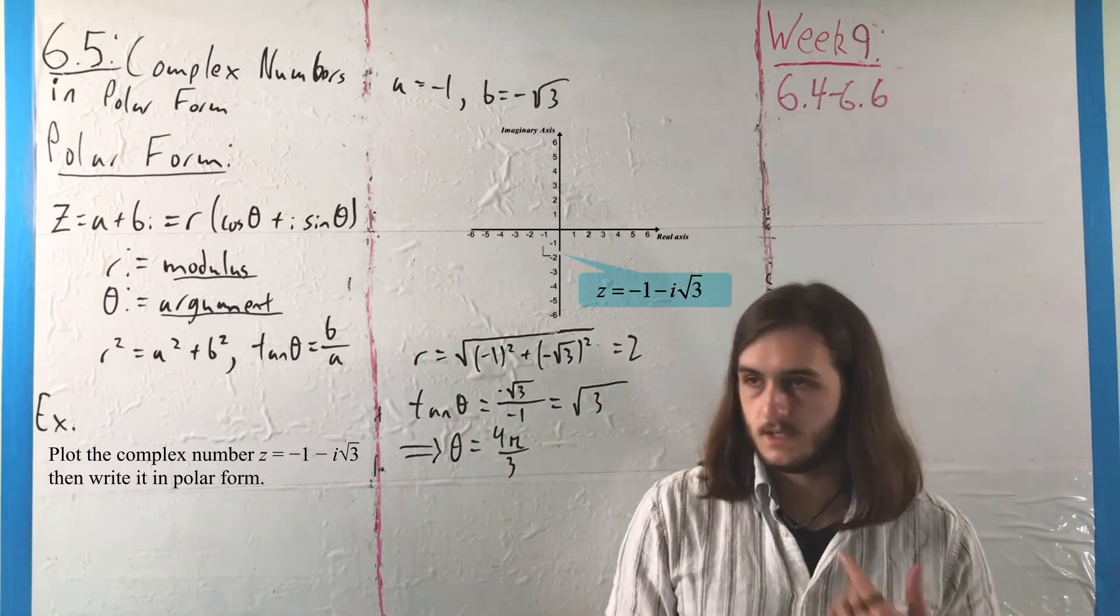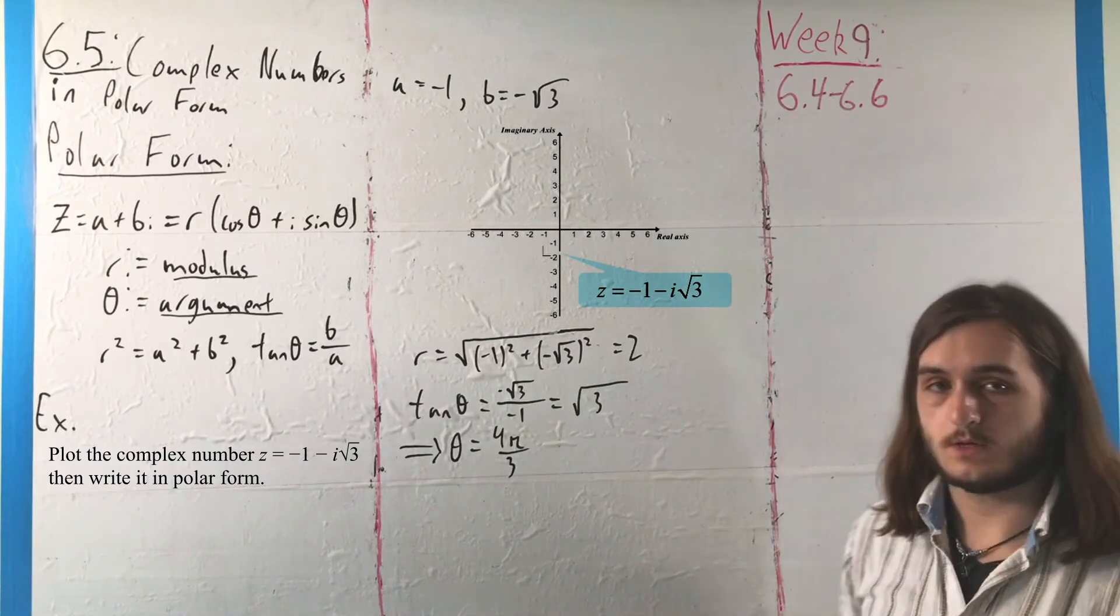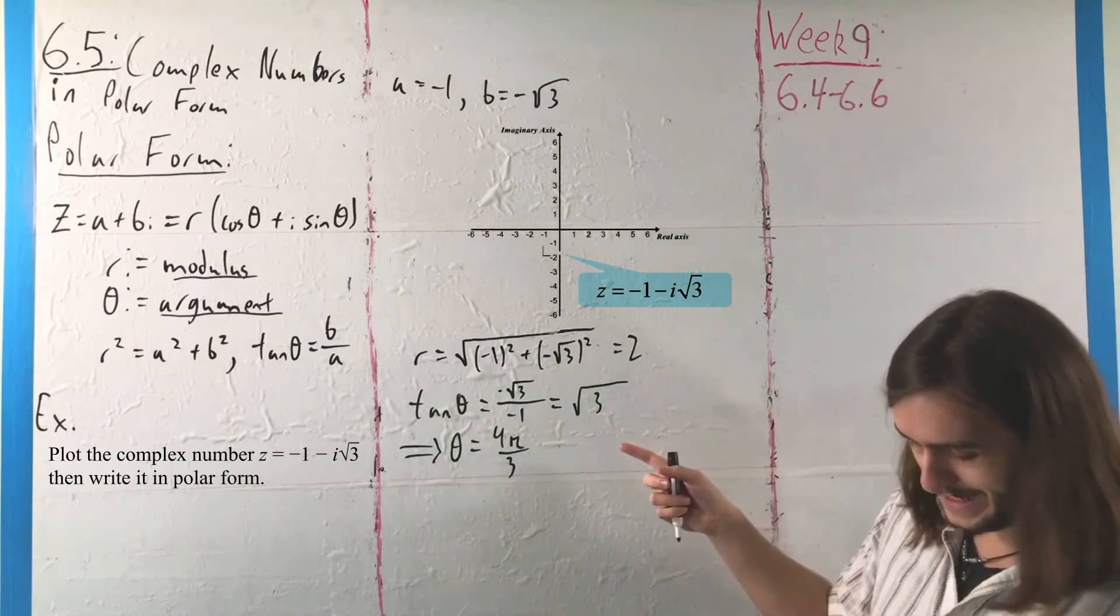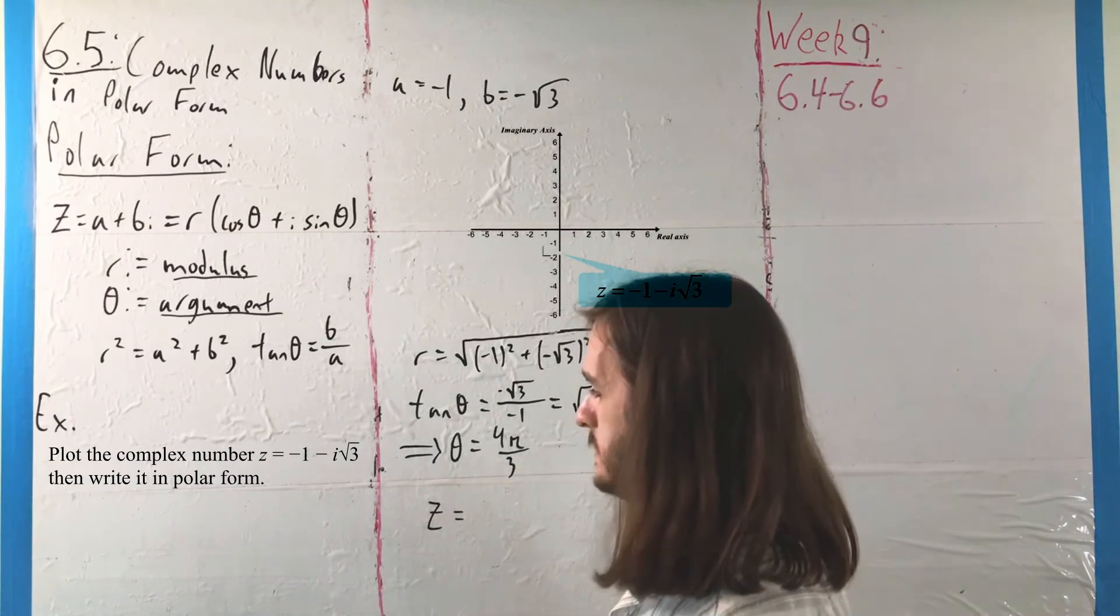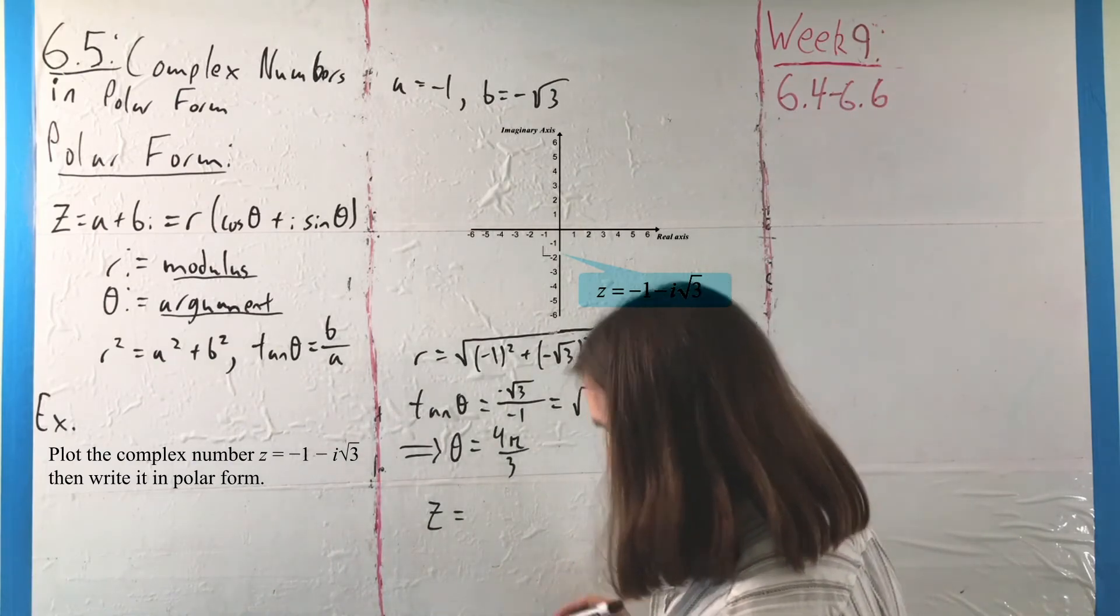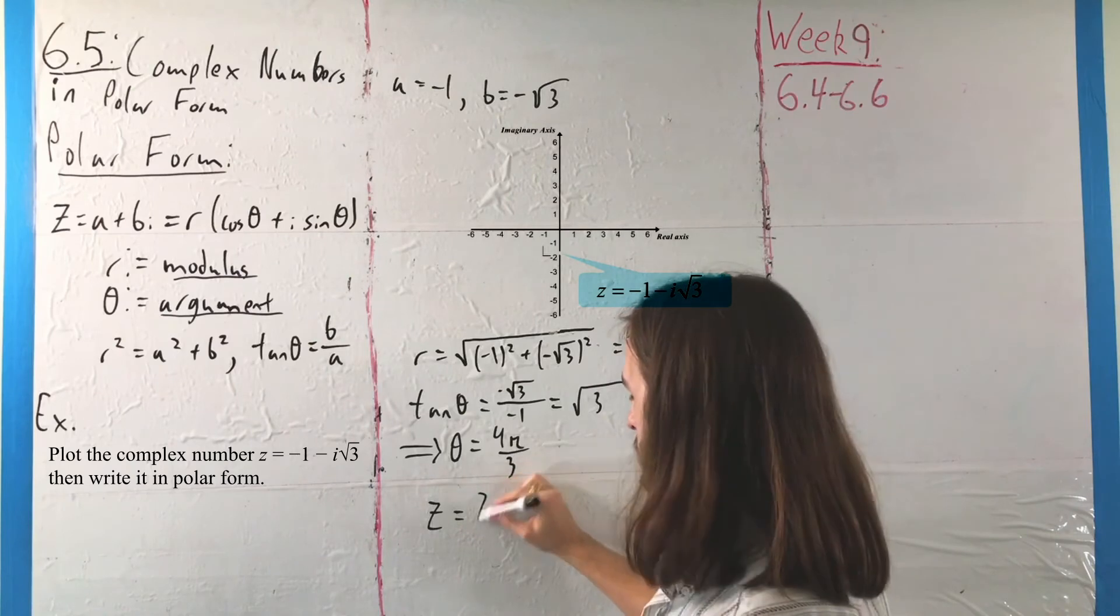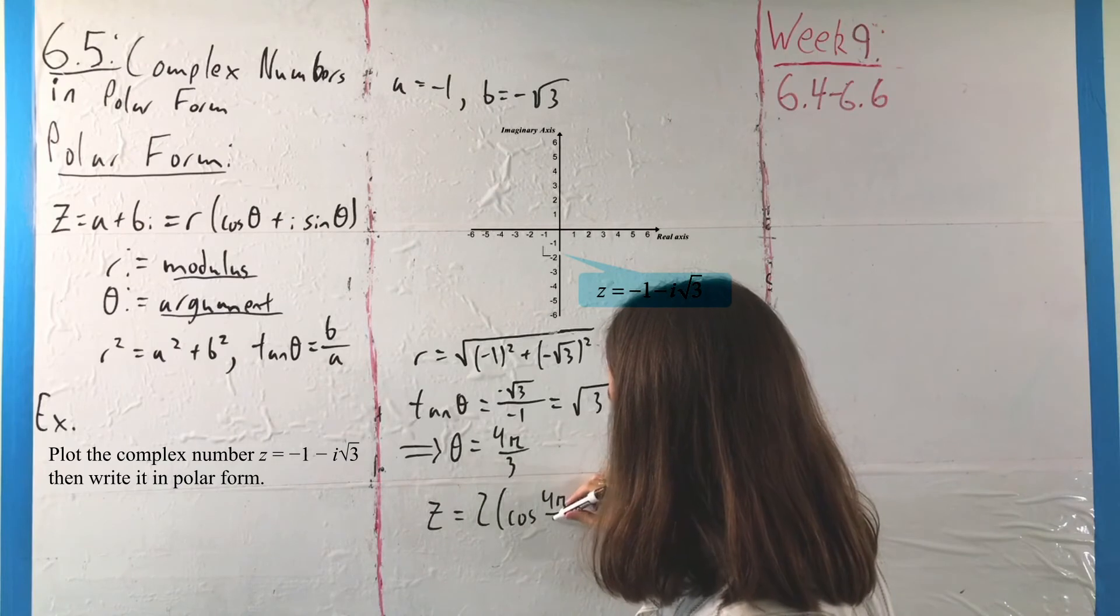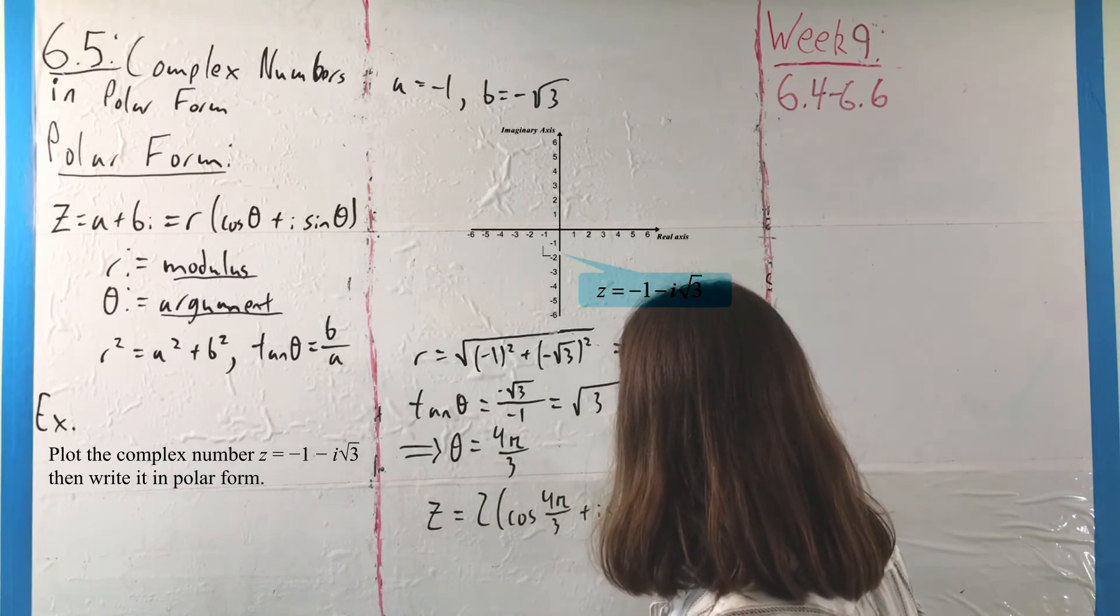If we want to pull all this together and write our value in polar form in terms of r and θ, we can say that z = 2(cos(4π/3) + i sin(4π/3)).